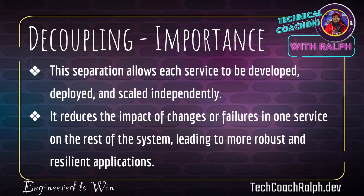The importance of decoupling: this separation allows each service to be developed, deployed, and scaled independently. It reduces the impact of changes or failures in one service on the rest of the system, leading to more robust and resilient applications. If one service goes down, the other services should not have to go down — the other four should still be fine.